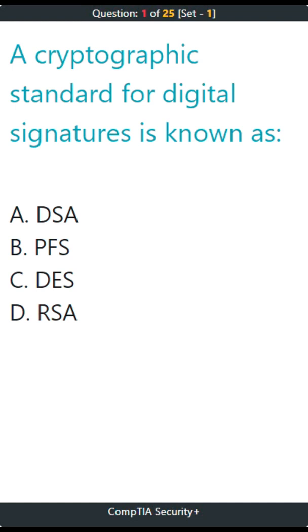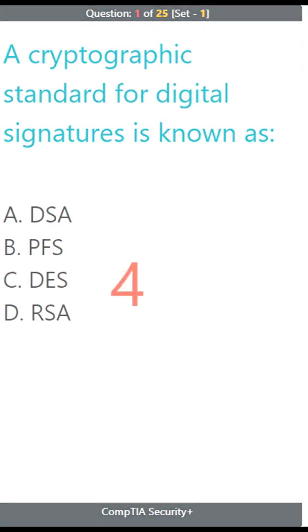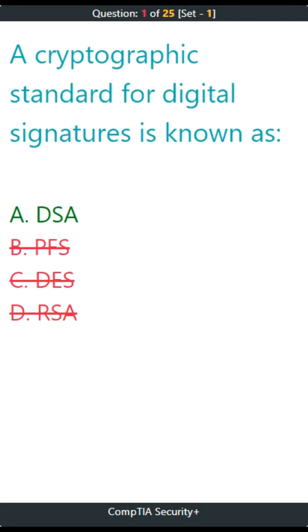Q1. A cryptographic standard for digital signatures is known as: A. DSA, B. PFS, C. IDA, D. RSA. The correct answer is A. DSA.